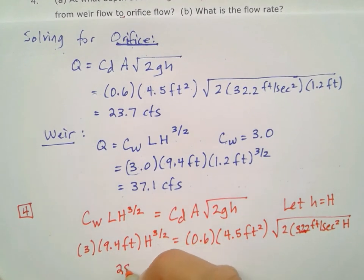Resolving this side, we get 28.2 H^(3/2), and we'll set that equal to 2.7 times the square root of 64.4H.